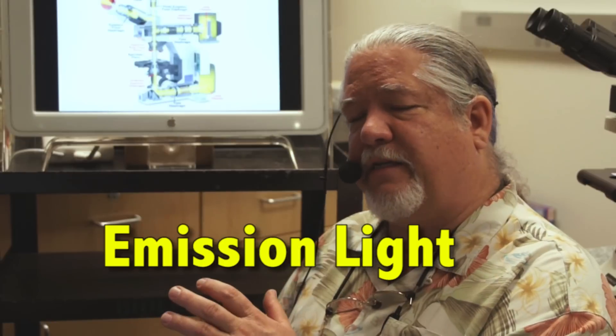Now a lot of specimens will auto fluoresce. You can excite them with a bright light like 490 nanometers and they will automatically give off light or emit light. That's called emission light. Usually the emission light is a longer wavelength than the excitation light and we'll talk more about that later.